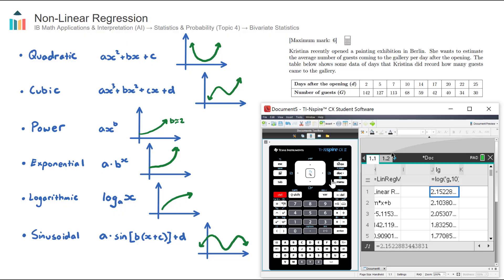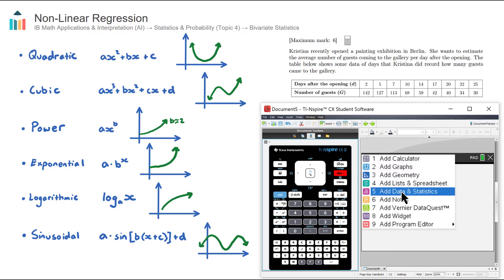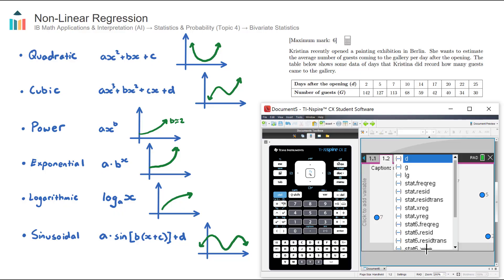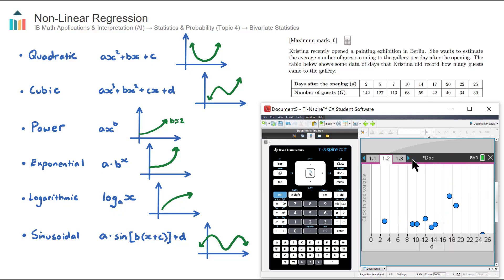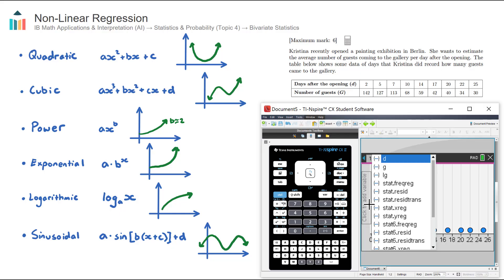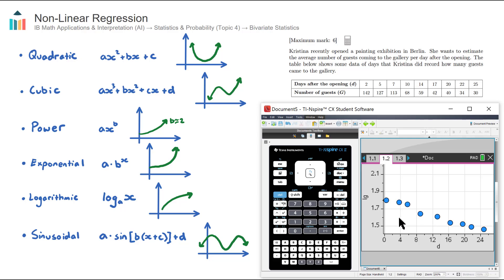Let's now do a scatter plot of the log of G versus D. So we go control, new document, add data and statistics. Our independent variable is still D, the number of days. But now our vertical axis variable is the log of G, LG. And notice here, we have linearized the data. The data is now more linear, but our vertical axis is the log of G, not G.